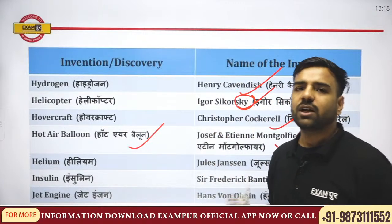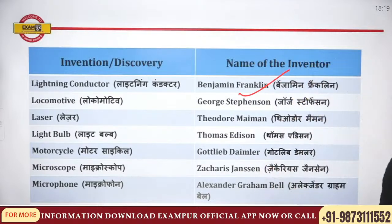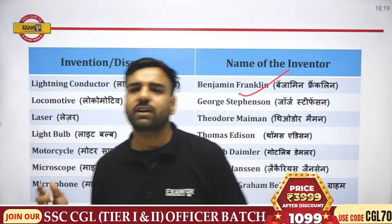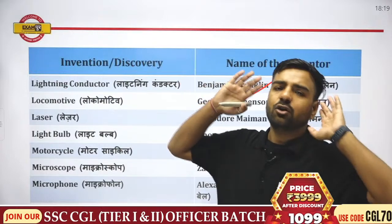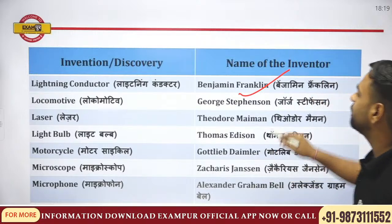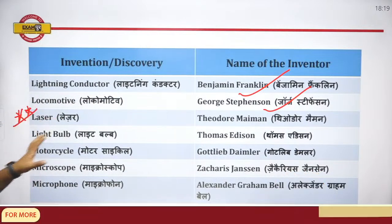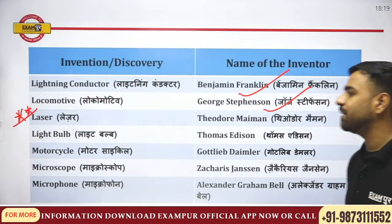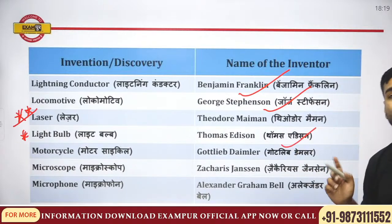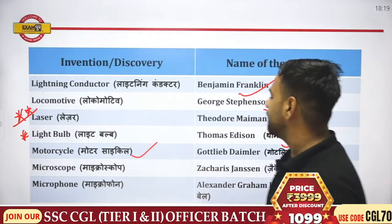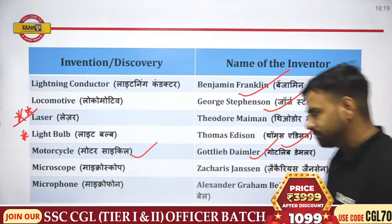Lightning conductor was discovered by Benjamin Franklin. Locomotive — when we talk about trains and engines — was discovered by George Stephenson. Laser is very important and asked in the examination — put a double star — laser was discovered by Theodore Maiman. Light bulb was discovered by Thomas Alva Edison — single star here.